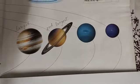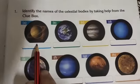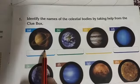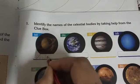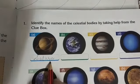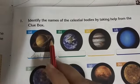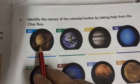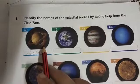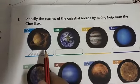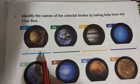Let's start doing the exercise. What is this? This is Saturn — S, A, T, U, R, N. Saturn has rings around it, as you can see. It is the second largest planet of the solar system. It is made up of different types of gases.